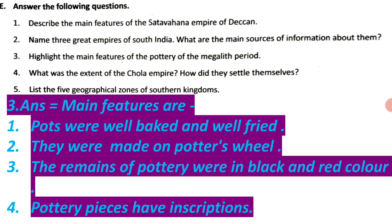Question 3: Highlight the main features of the pottery of the megalithic period. Answer: The main features are — pots were well baked and well fired. They were made on a potter's wheel. The remains of pottery were in black and red color. Pottery pieces have inscriptions.